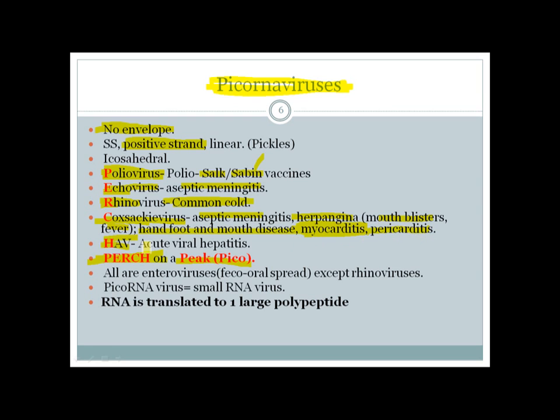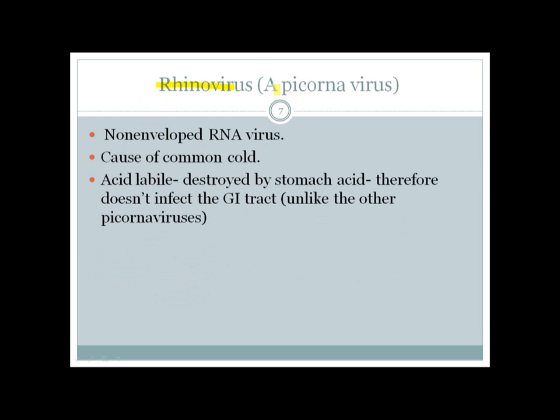Most Picornaviruses are enteroviruses, meaning they are spread fecal-orally, except Rhinovirus. The name Picorna contains 'RNA' — pico-RNA virus — so these are small RNA viruses. The RNA is translated into one large polypeptide which is later cleaved to give the needed proteins for the virus.